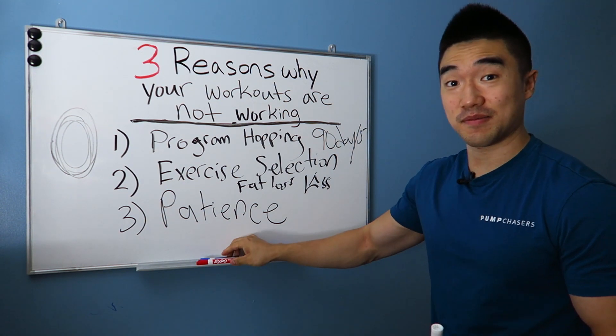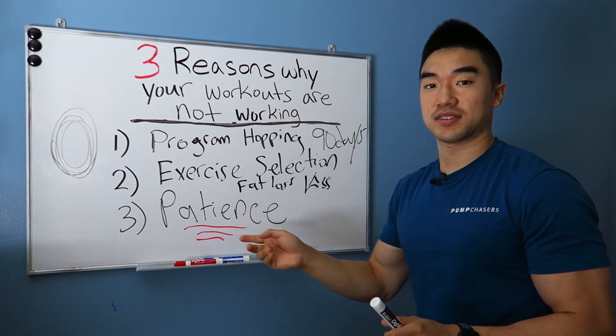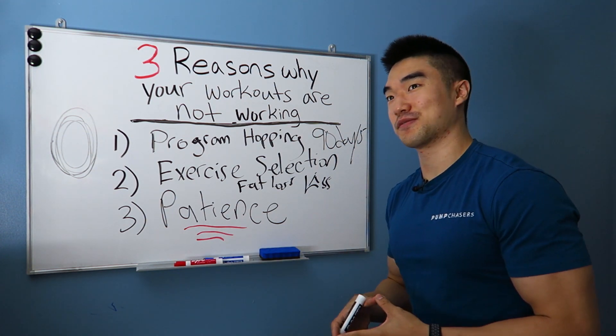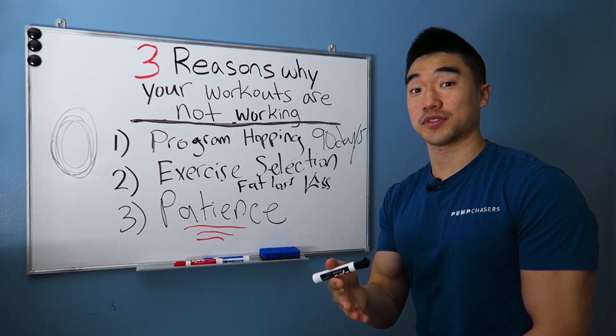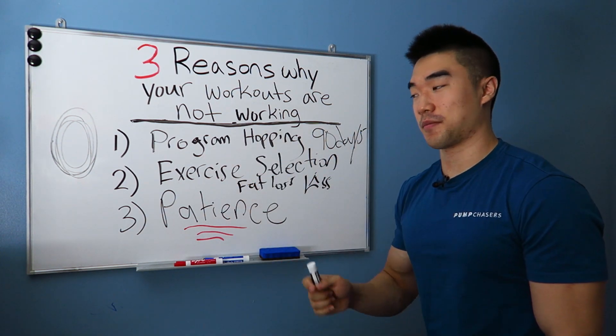Patience is a big one, probably the number one thing that ties all these things together. Just give yourself time. You're not going to change overnight. You're not going to lose 50 pounds overnight. Give yourself time. Give yourself those 90 days. Give yourself those 60 days and then decide if you want to change your program.